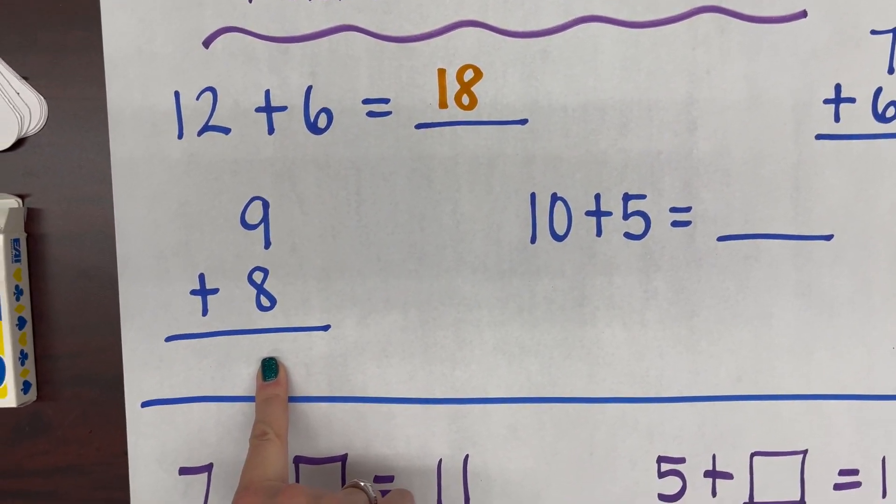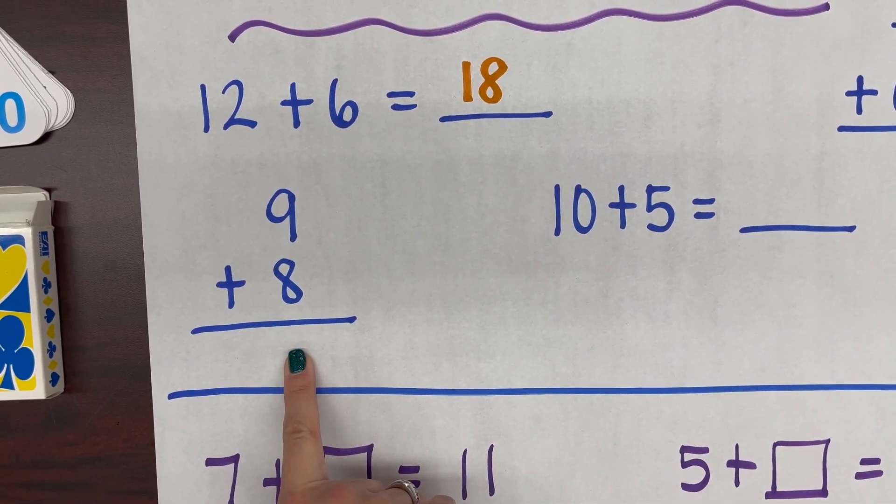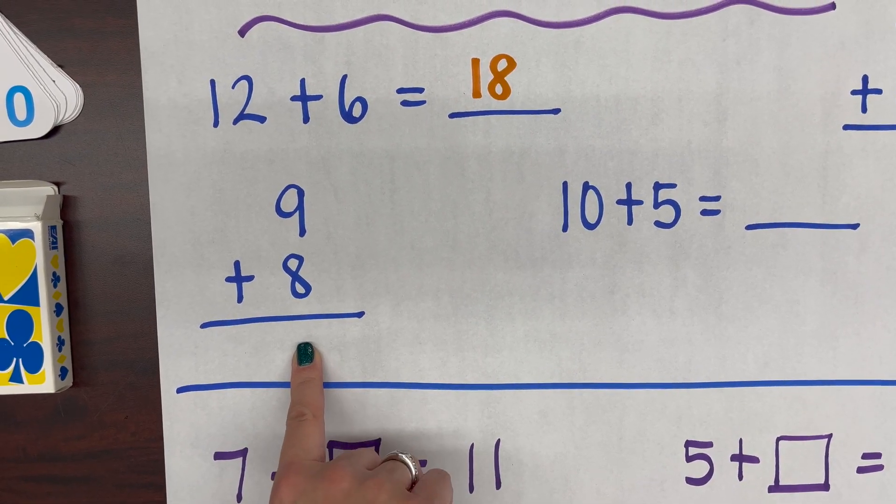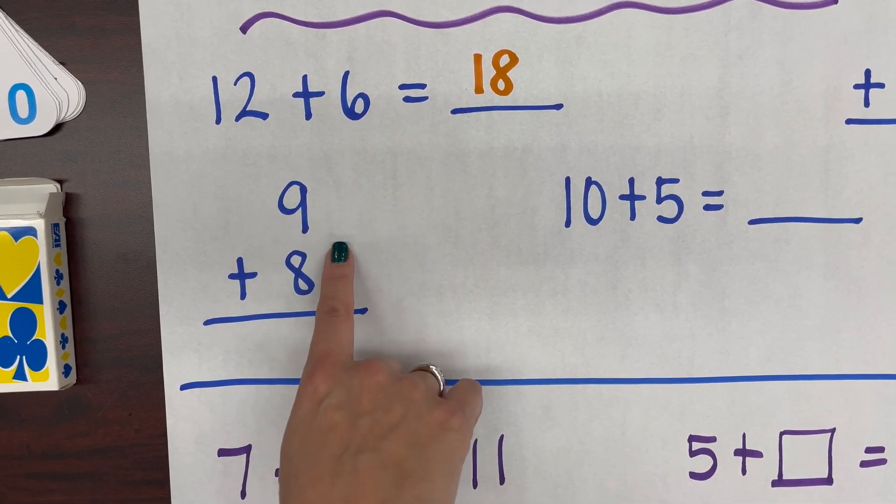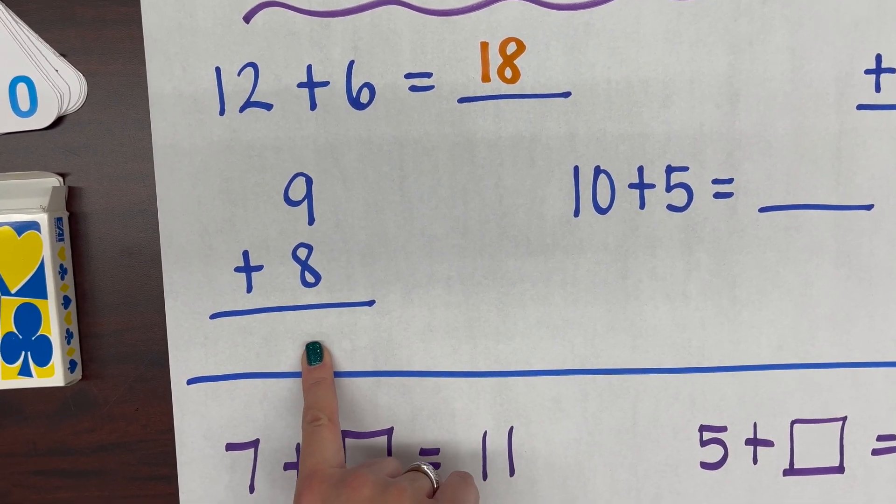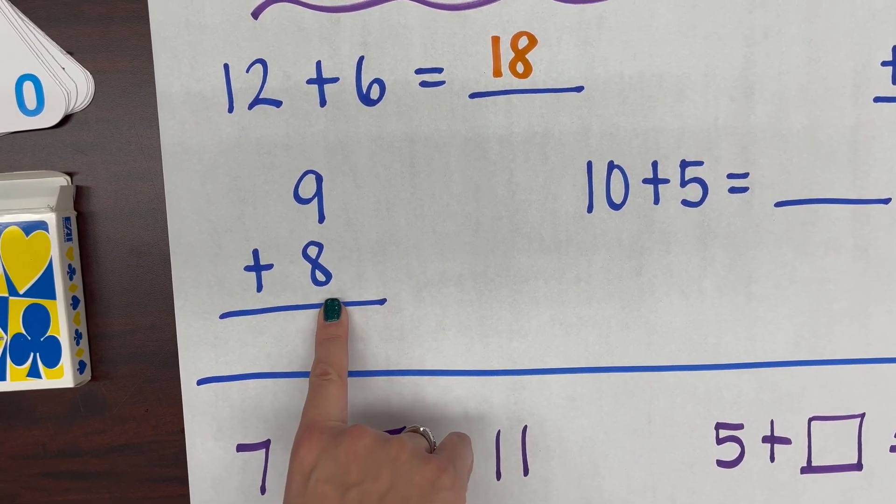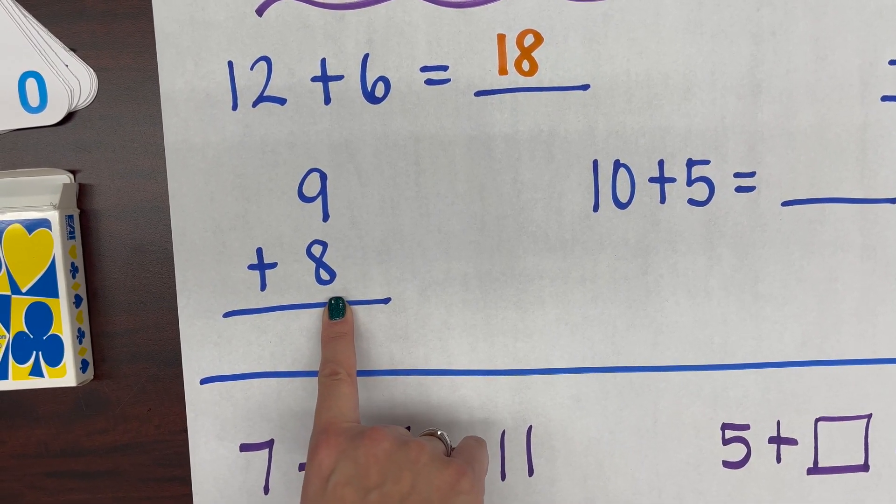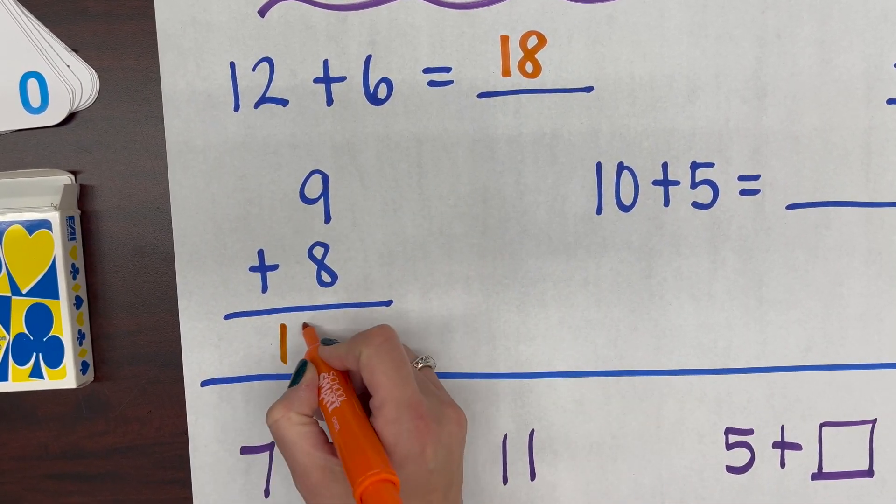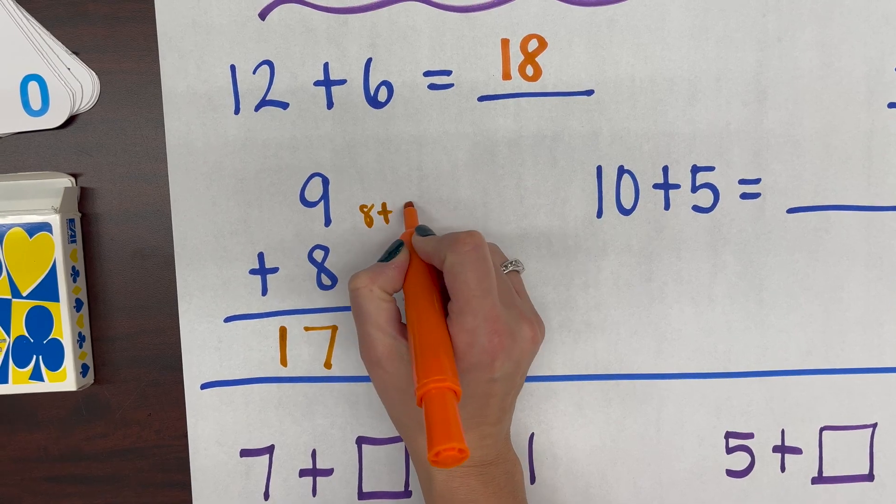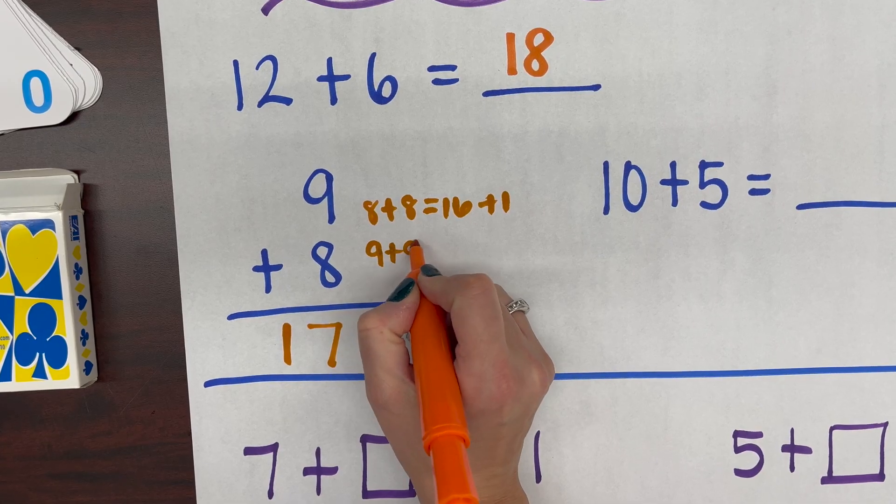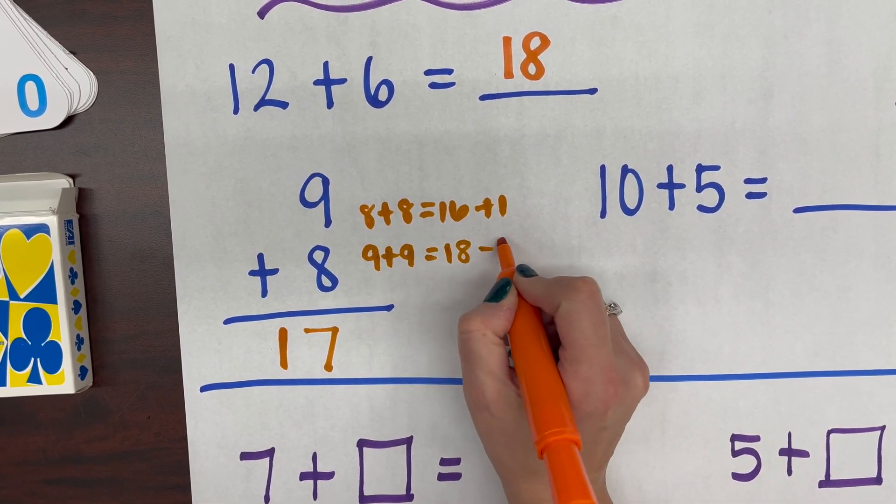Moving on to 9 plus 8, here I might try to use a related fact. So a doubles fact that I know is 9 plus 9. 9 plus 9 is 18. 9 plus 8 would be 1 less, and so 18 minus 1 would give me 17. Another way I could see it is if I wanted to use the 8 facts and say 8 plus 8 was 16, I could add 1 more and 16 plus 1 more is 17. So I could use 8 plus 8 and plus 1, or I could use 9 plus 9 which was 18 and then subtract 1.